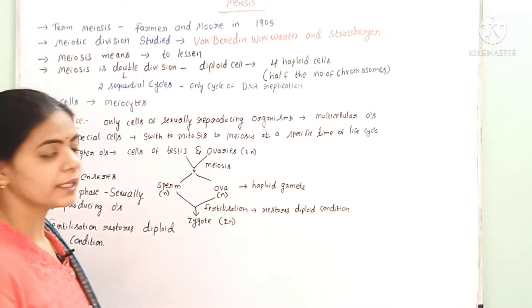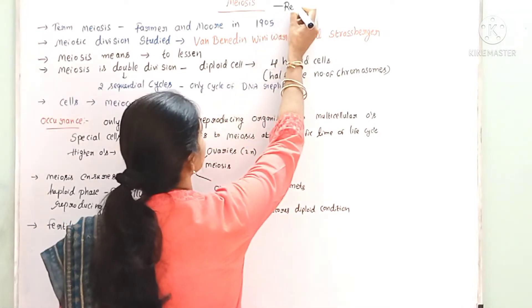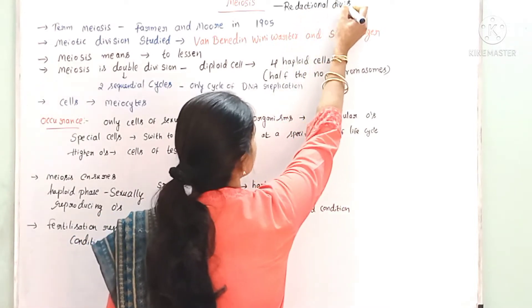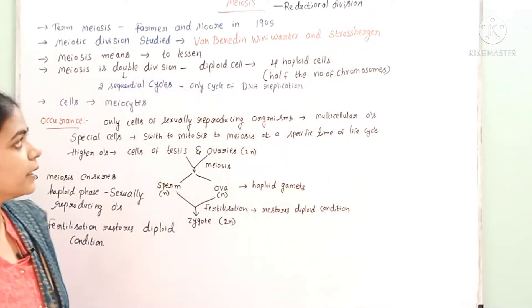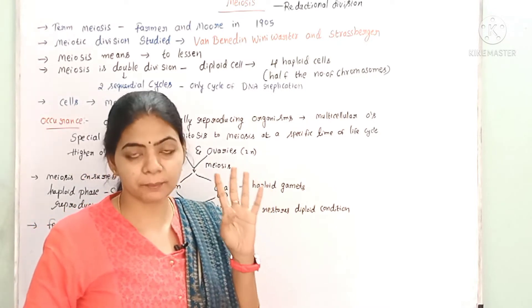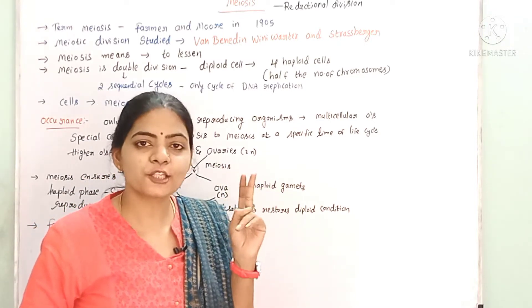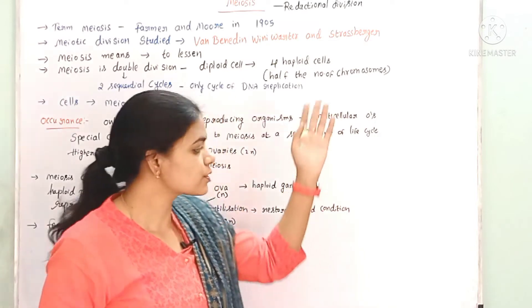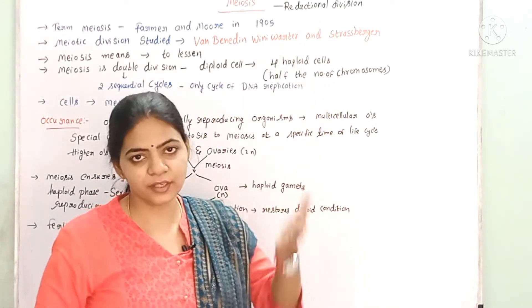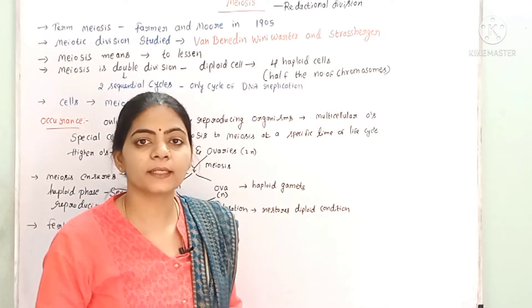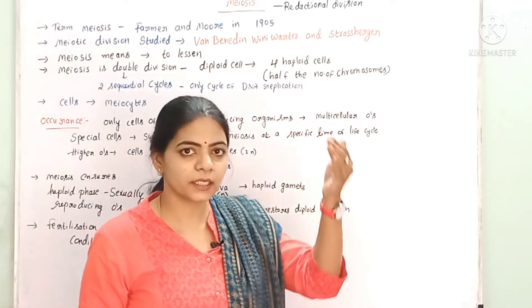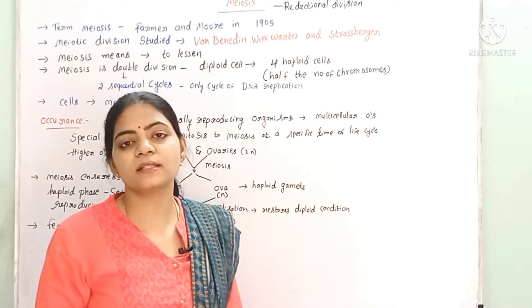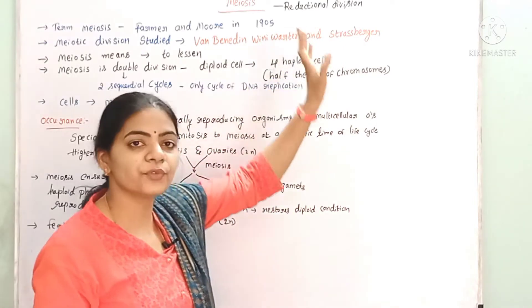What is another name for meiosis? Reductional division. In meiosis, four daughter cells are formed (compared to two in mitosis), and in those four daughter cells the chromosome number is reduced — it is halved compared to the mother cell. And the daughter cells are not identical to the parent cell. That is why meiosis is called reductional division.